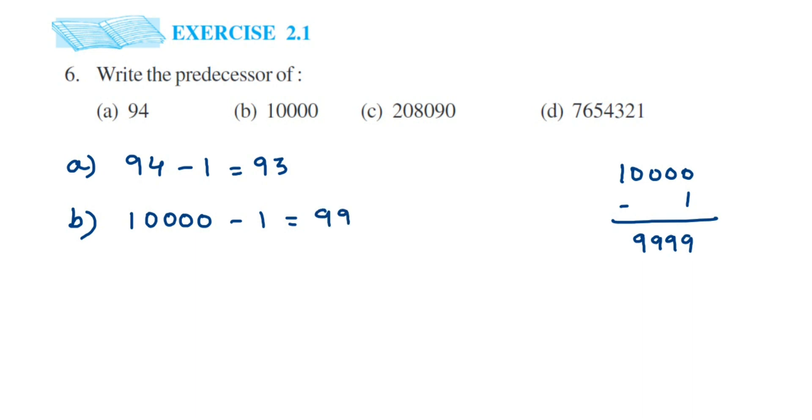Then the next problem: we have 208090 and we have to find the predecessor, so minus 1. We have again 0 and we have 99, so let me show for this question at least. 208090, when you subtract 1 from it - since we cannot subtract 1 from 0, we have to take a borrow from 9.